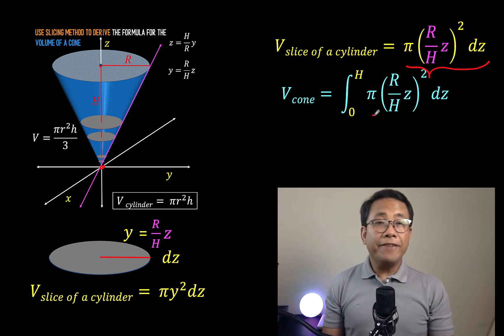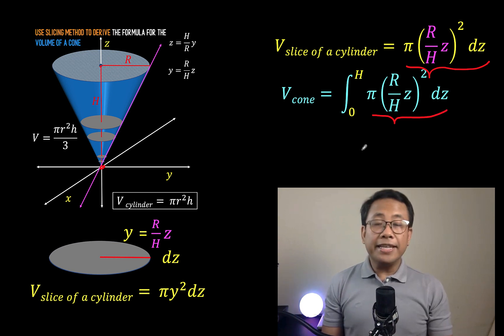What this means is we have here the expression representing the volume of this circular disk. And there are infinitely many circular disks that can be cut from this cone, but those disks are situated from z equals 0, which is our lower limit of integration, up to z equals the height itself of the cone. So what we need to do now is to solve this definite integration problem.